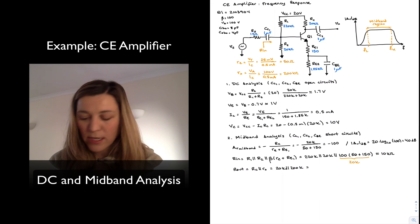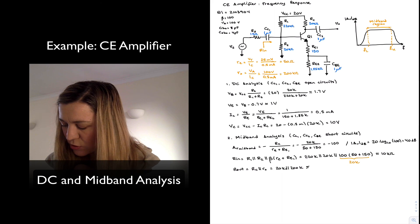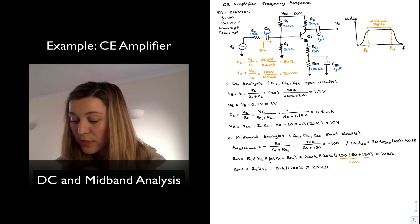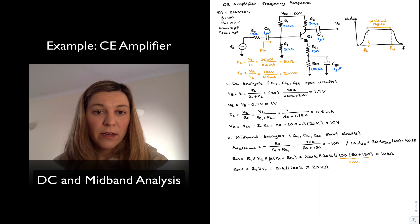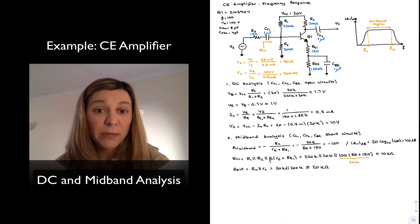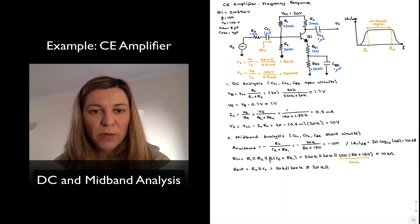So this will be 20k in parallel with 200k. Again, we can see that 20k will dominate, and so this is just approximately equal to 20 kOhms for my output resistance. And that's it. We've completed the DC analysis and AC analysis, or more properly called the mid-band analysis for the common emitter amplifier.